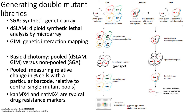In DSLAM, you start with the query mutation linked to a selectable marker and introduce it into a pool of heterozygous diploid strains by high-efficiency integrative transformation. In Genetic Interaction Mapping, similar to SGA, you start with a MAT alpha haploid query strain carrying the query mutation and drug resistance marker, and mate it against a pool of MAT A deletion mutants — so it's like SGA but mating happens in a pool rather than in individual array spots. For both DSLAM and GIM, after generating pools of double heterozygous diploids, the rest of the protocol looks just like SGA, except you're working in pools instead of individual array spots.